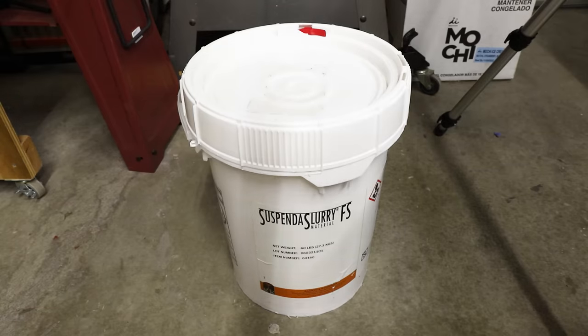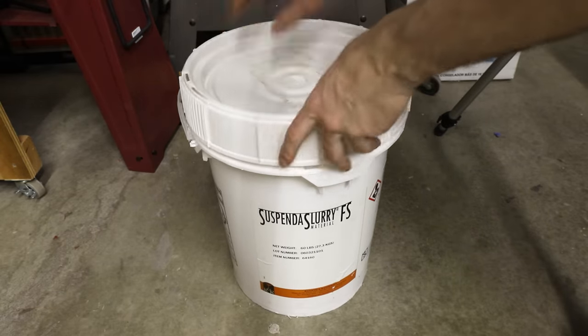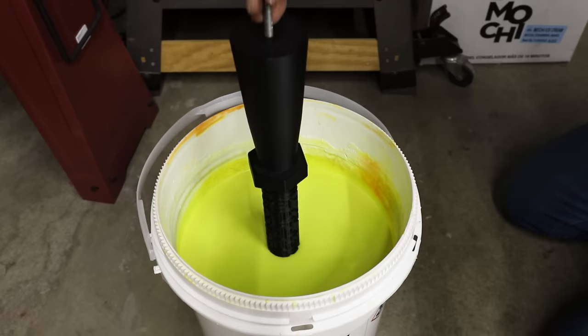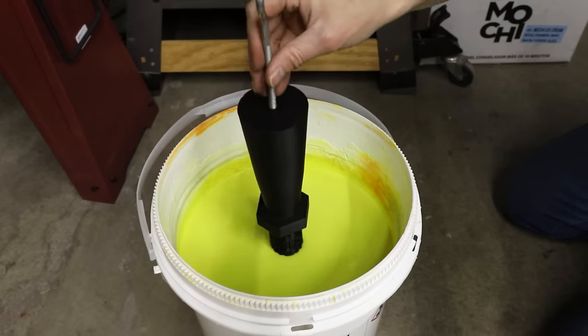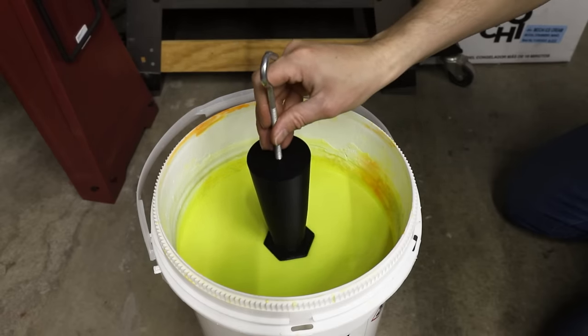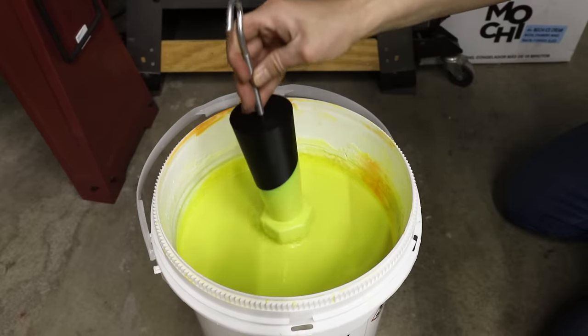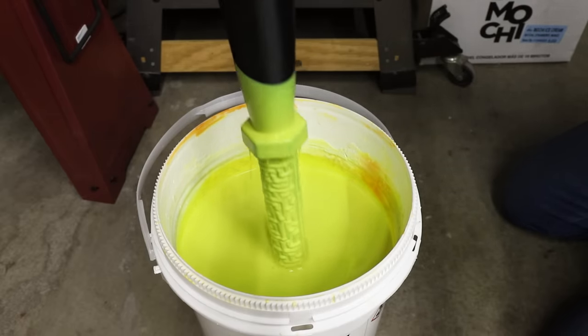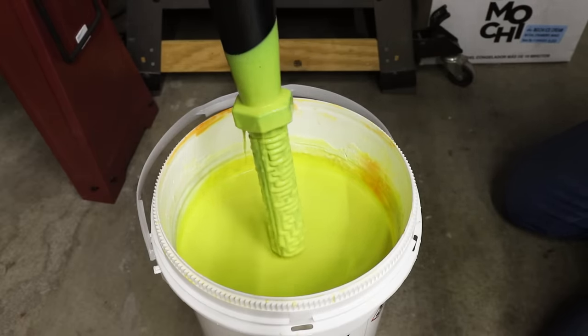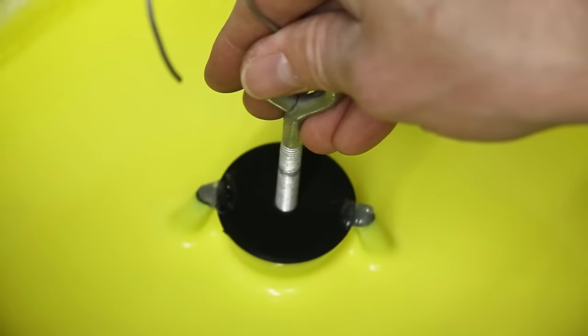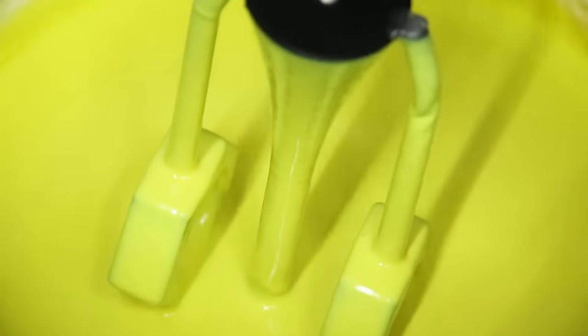This is the liquid ceramic that I used. It's called suspend-a-slurry. I carefully dipped the models into the slurry, making sure to avoid trapping any air bubbles on the surface of the models. The first few coats are the most important, as this is where the fine detail is captured. My goal was to slowly build up a thick shell by coating the models with slurry about 10 times.